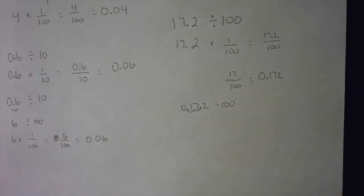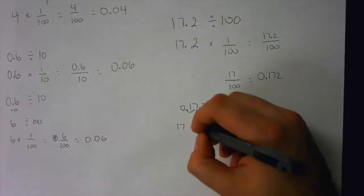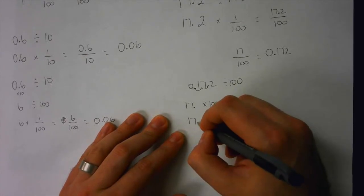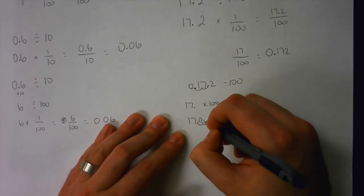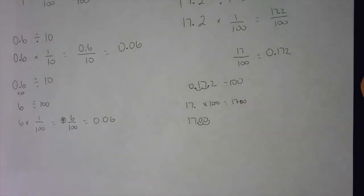If this was 17 times 100, the decimal is over here, you're jumping two decimal spots again. 1, 2. Your answer is 1,700 or 1,700. It's the same thing.